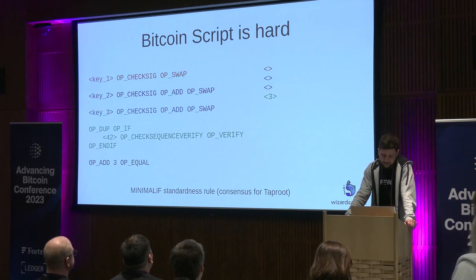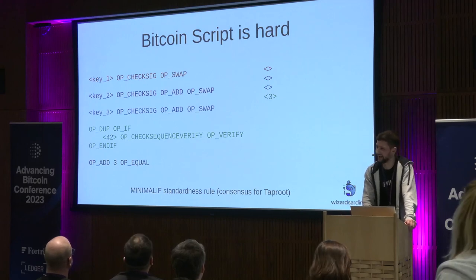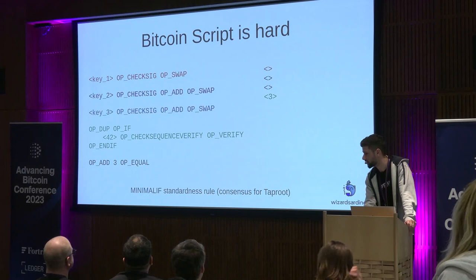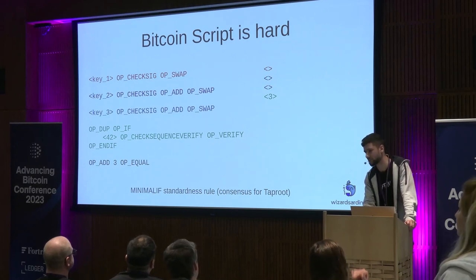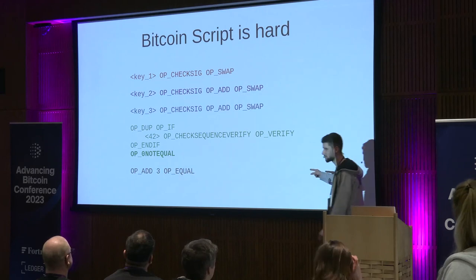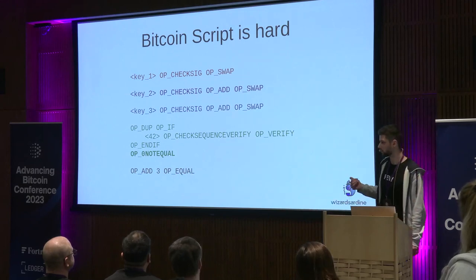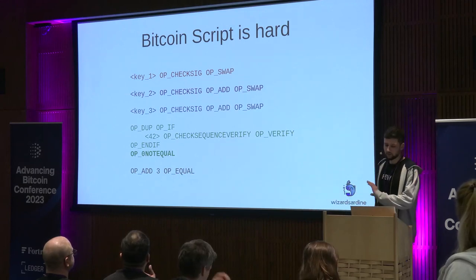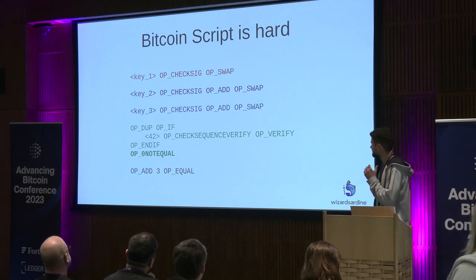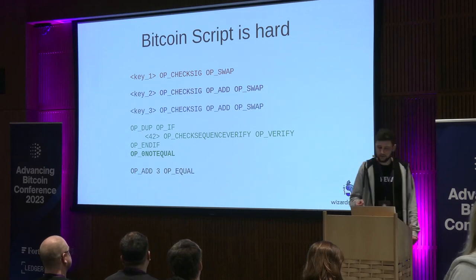This bug was found by Andrew Poelstra in miniscript last year. It's a good instance of a soundness bug — you think your script is doing what you intended, but it's not, and people can just steal your money. This is a pretty simple script compared to what people are using today — for instance, the HTLC script is far more intricate. Hopefully this illustrates how hard Bitcoin script is and motivates the need for something we can reason about — that's where the type system comes in.